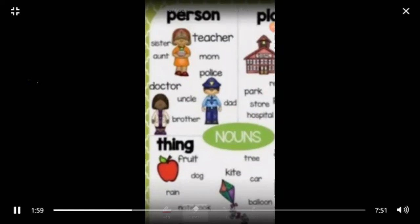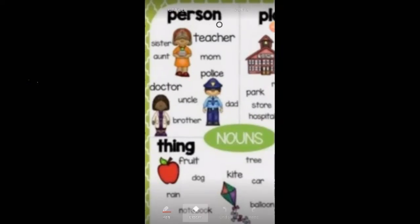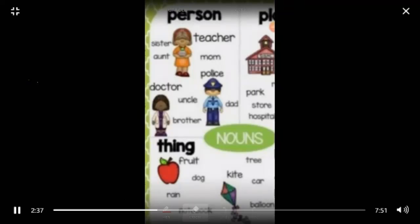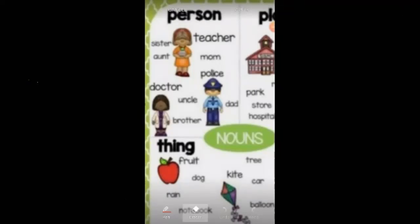In this picture there are different persons — teacher, people, sister, aunt, mom, police, doctor, uncle, brother, dad. These are the different names of people that we come across and they are under the heading of persons. Each one of them has a special name given to them, and these names are called naming words, names, or nouns. Can you see this over here, children? Nouns.